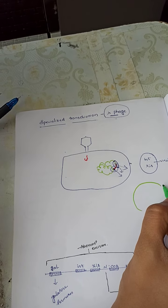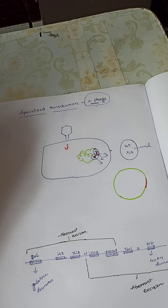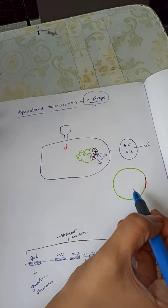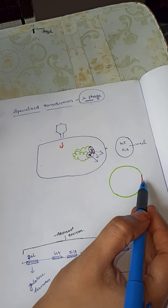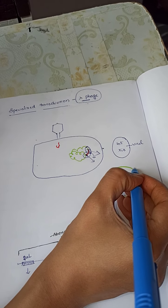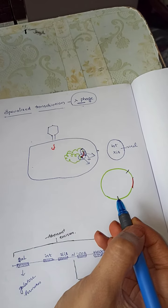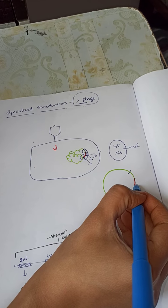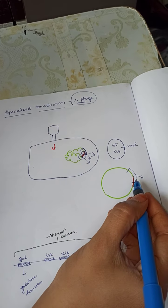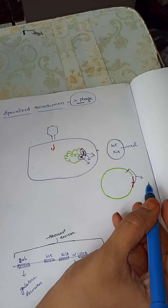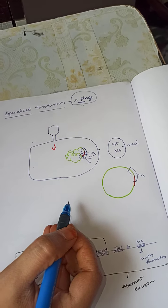If this is the bacterial genome and this is the viral genome, usually a cut should happen here and here, and the viral genome should get excised and come out. But sometimes there can be an aberration: a cut may happen at a different position, and another cut may happen elsewhere, so this portion of DNA gets excised off and comes out.